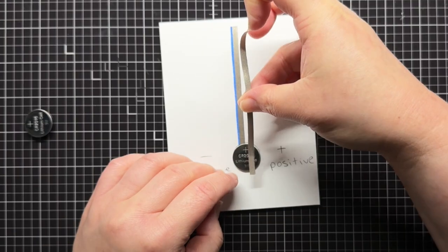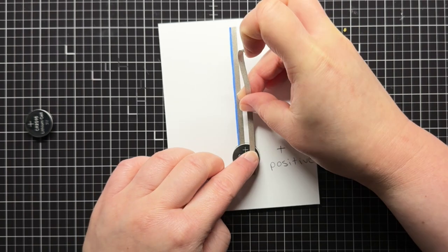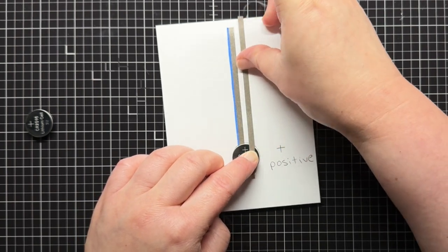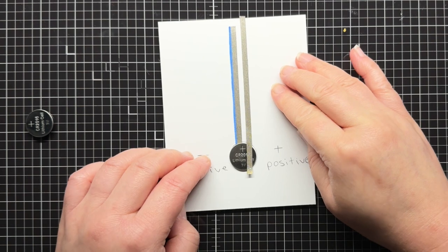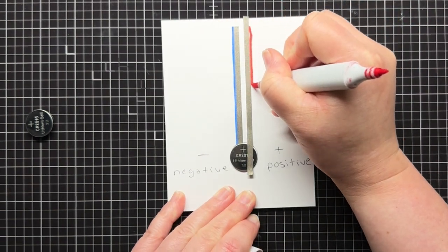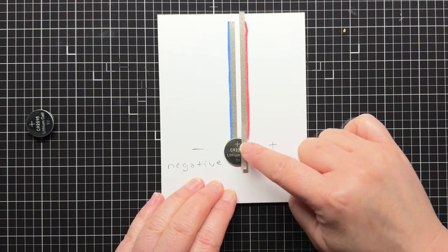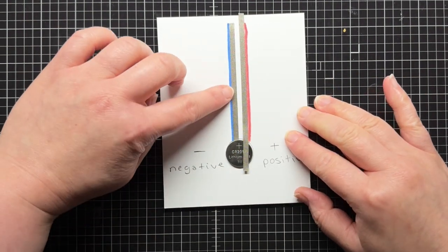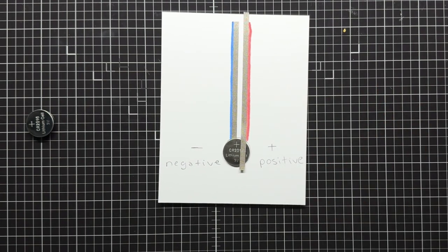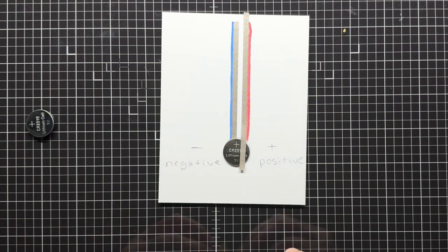Next, I take a second piece of conductive fabric tape and run it parallel to my first piece of tape, but this time I'm starting it on the top, positive side of my battery. I'll use a red marker to show the positive side. Again, as you can see, the negative line of tape touches the negative side of the battery, and the positive line of tape touches the positive side of the battery.